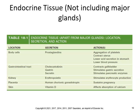Endocrine tissue apart from gland locations: body cells secrete prostaglandins, which can help contract the uterus, lower acid secretion in the stomach, lower blood pressure, and affect aggregation of platelets. The GI tract has cholecystokinin and gastrin secretin, which contracts the gallbladder and stimulates gastric secretion. The kidney produces erythropoietin, which stimulates red blood cell production. The placenta has HCG — human chorionic gonadotropin — which sustains pregnancy. And the skin secretes vitamin D, which affects the absorption of calcium.